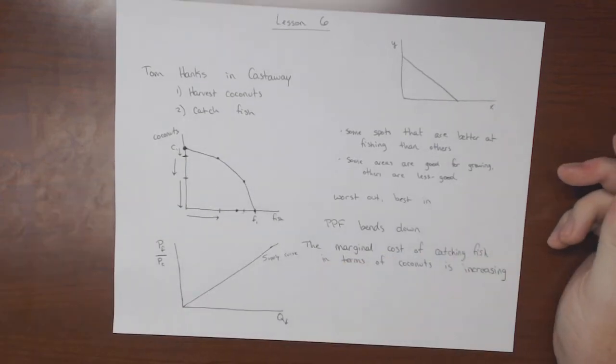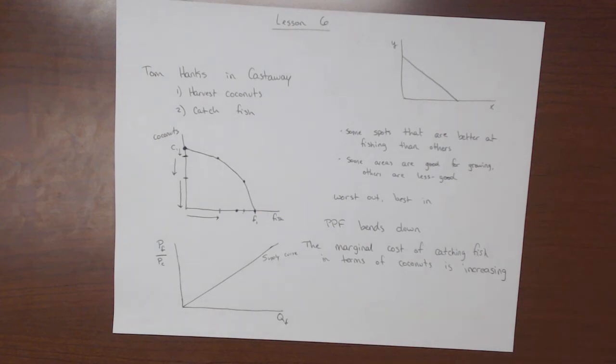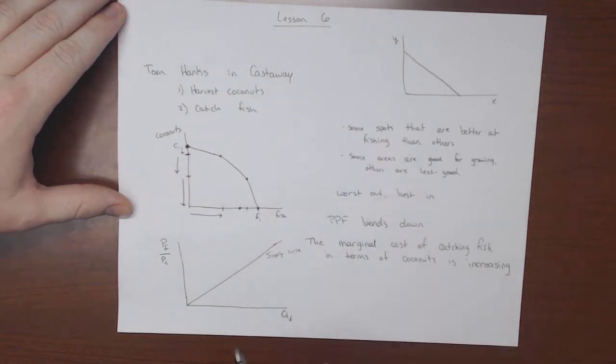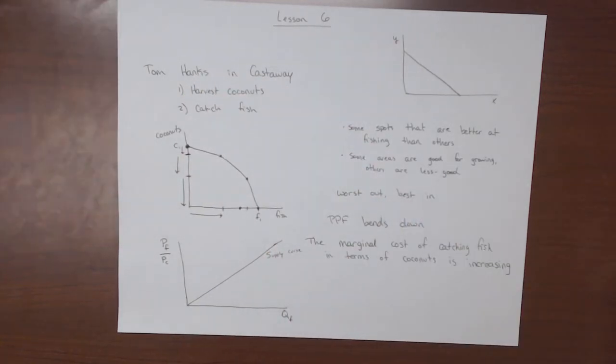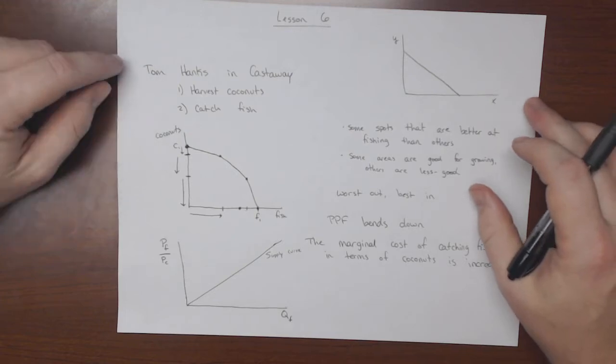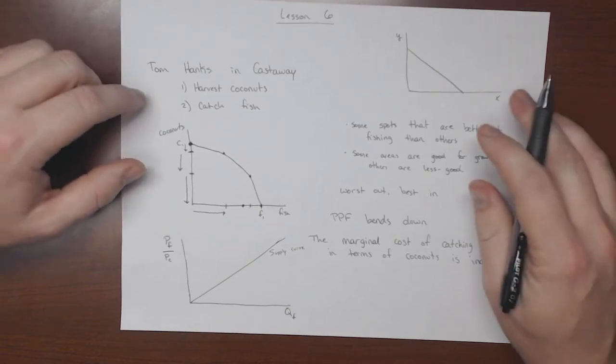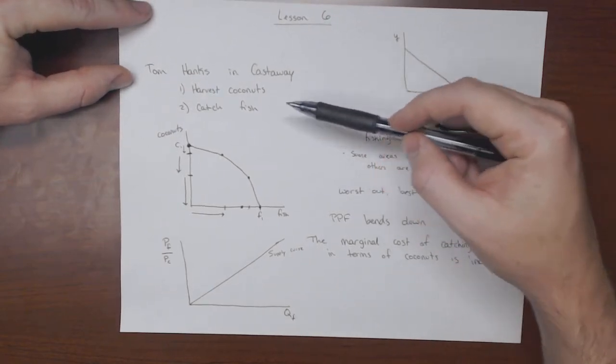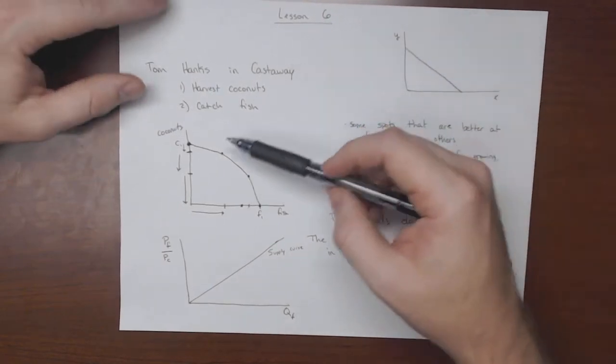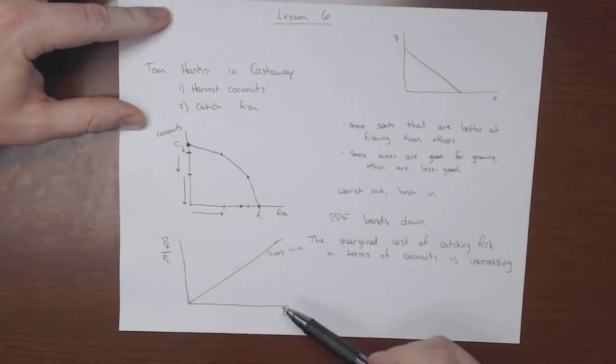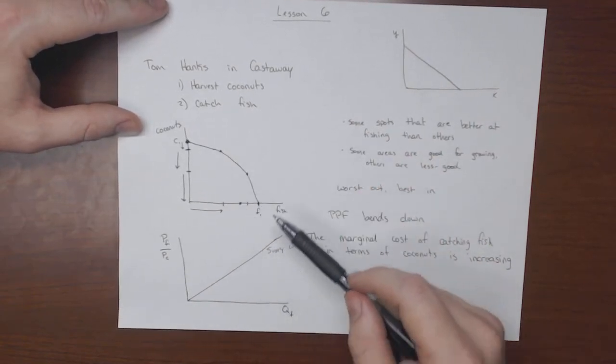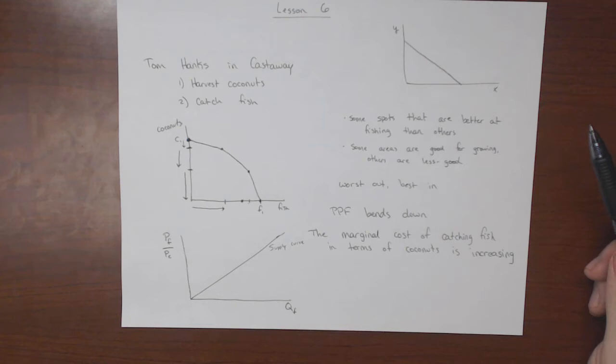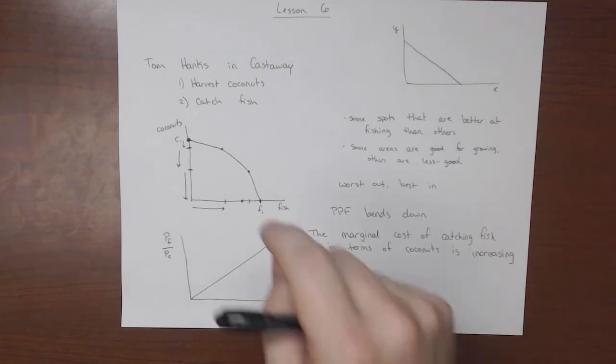So this was, if we go back to when we started Lesson 5, this is how we determine from the PPF a nation's supply curve. If we could do the same type of thing, instead of talking about Tom Hanks, we could talk about the United States, instead of harvesting coconuts and catching fish, we could say producing oil and computers or whatever goods we want, and we get the same diminishing marginal return or increasing marginal cost, which would generate this upward sloping line.